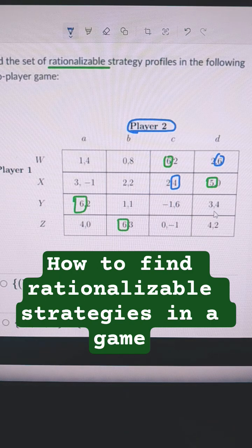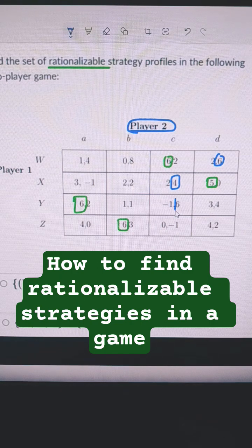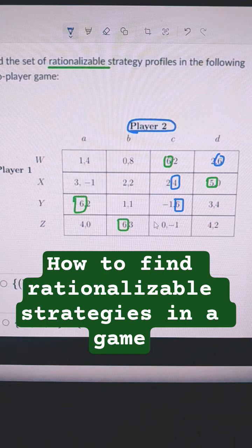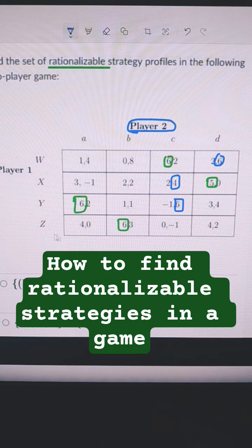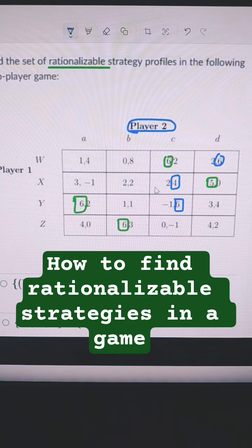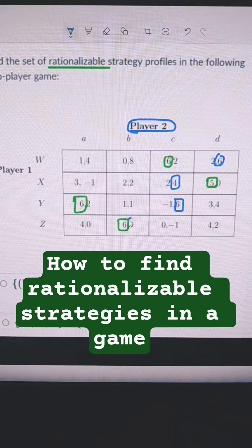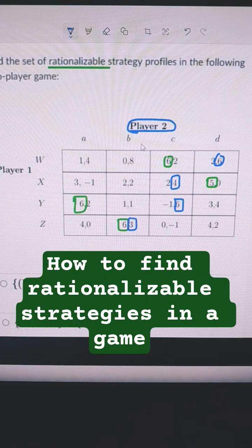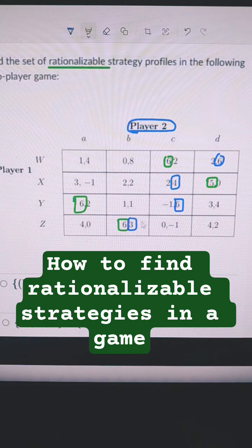If player one does Y, what's best for player two? That would be to get that 6. And then finally, if player one does Z, what's best for player two? That would be to go B and get 3.